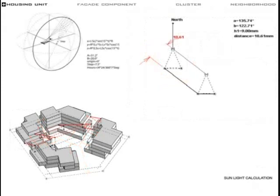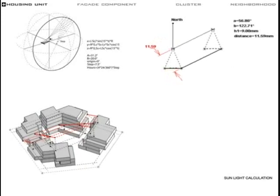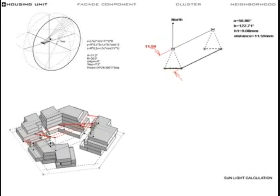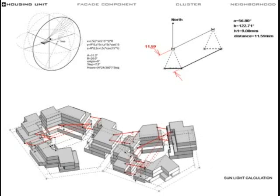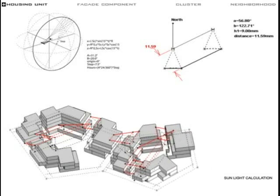The national regulation of providing two hours of sunlight for each apartment on a specific day in winter is integrated into the geometric model. Certain distances and number of floors are automatically calculated.